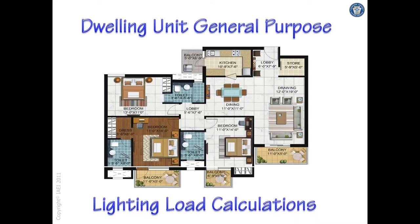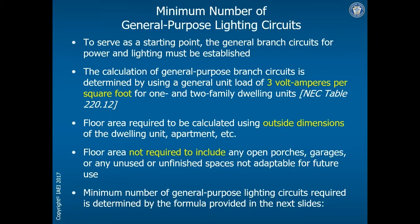Here's another calculation that we do quite often: the general purpose lighting load for a dwelling unit. This is how we determine the minimum number of general lighting circuits for a dwelling unit — the general lighting circuits that supply power to switches, lighting, and receptacles in dens, bedrooms, and similar spaces. We have a table in the 2017 code, and there was a change in the 2020 code we'll look at shortly. It doesn't change the calculation, but it does change where we find these rules.